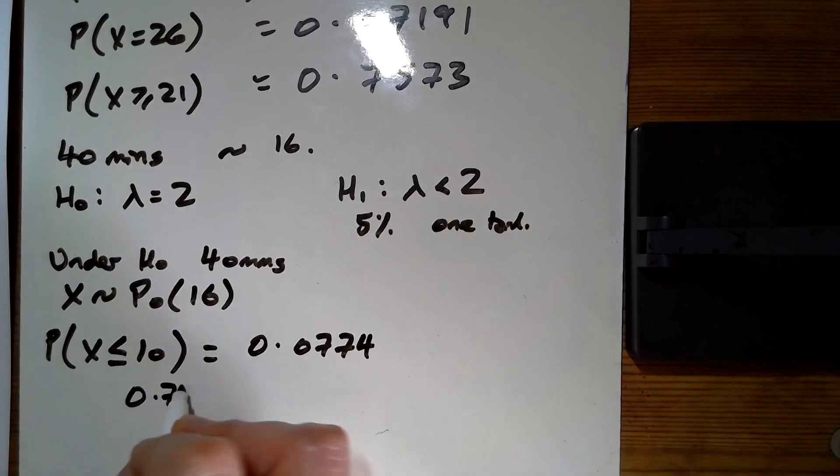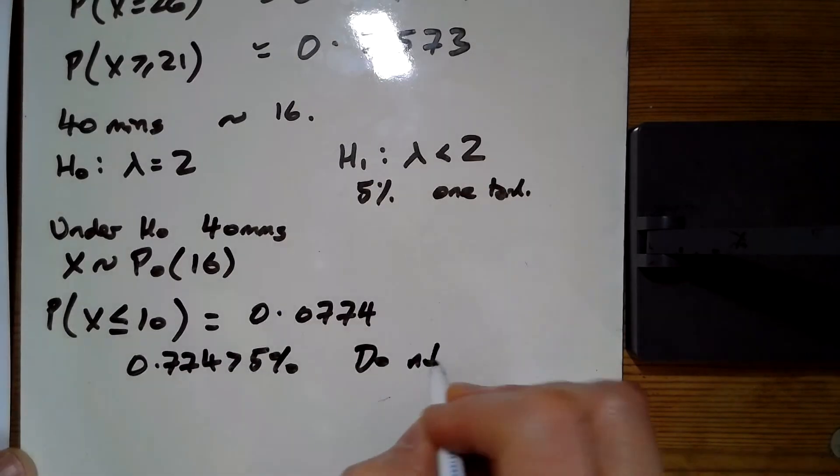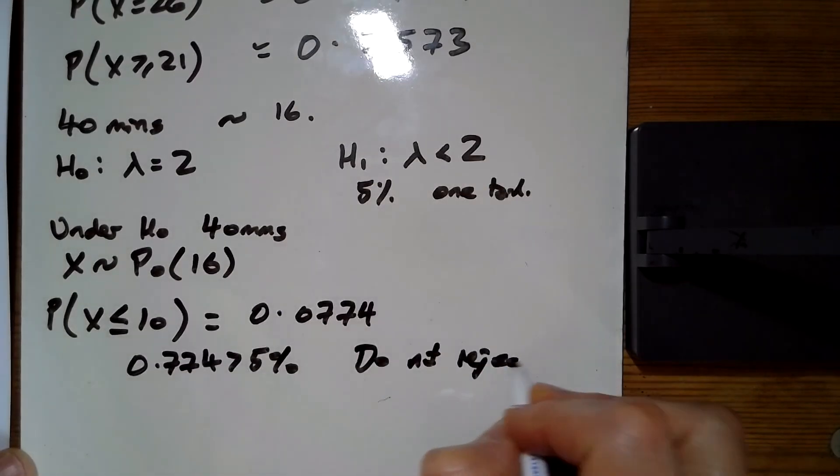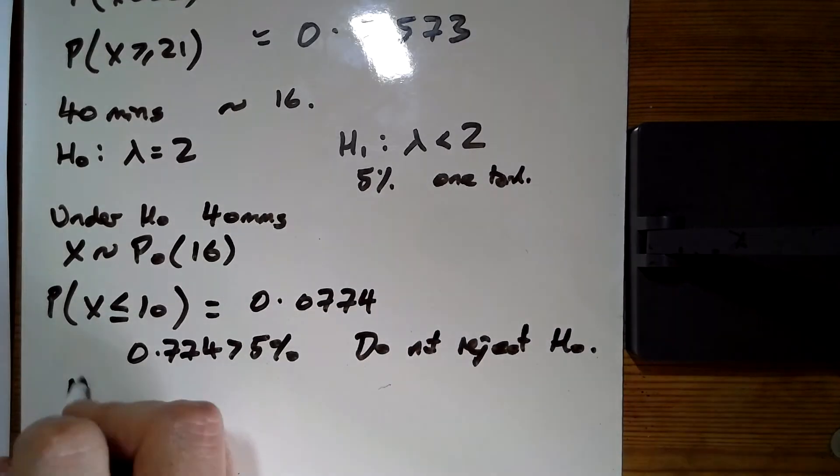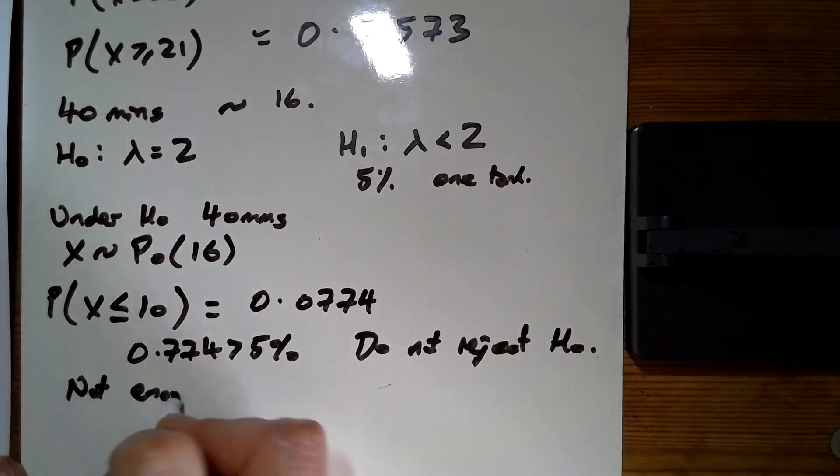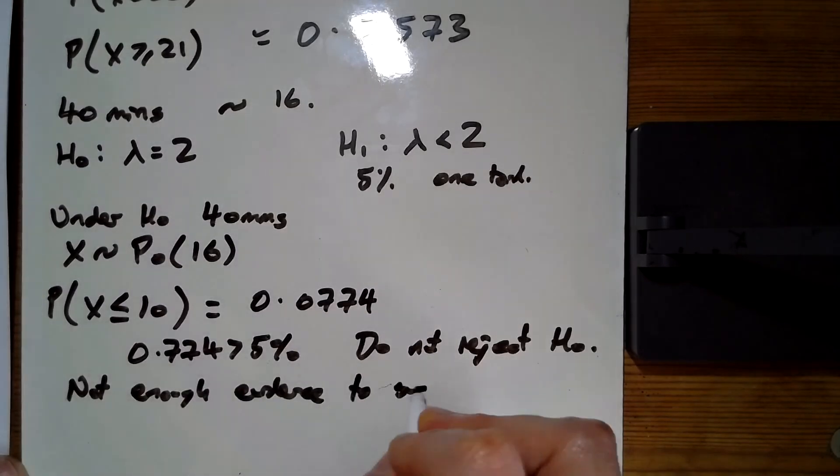0.0774 is greater than 5%, so do not reject H₀. Not enough evidence to suggest a decrease.